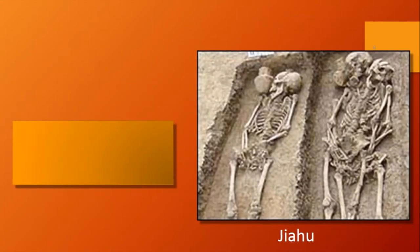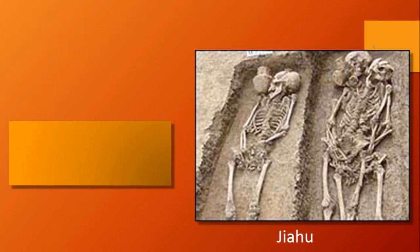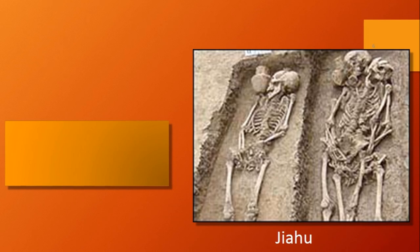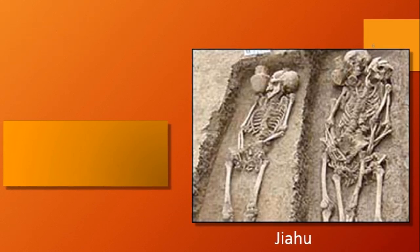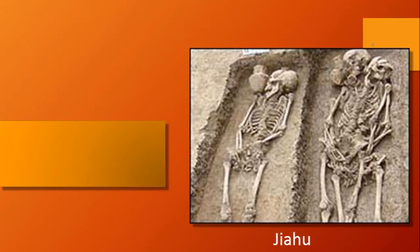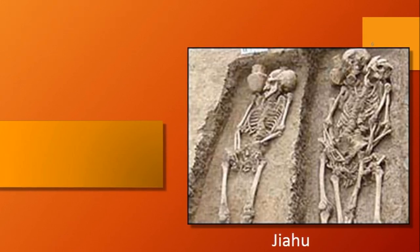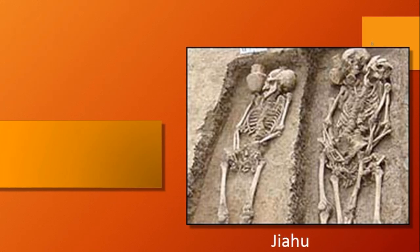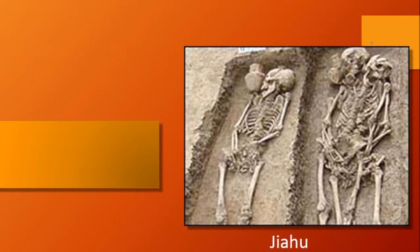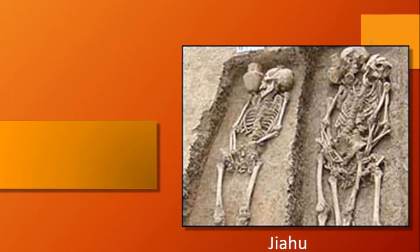Here are images of some grave sites from Jiahu. On the left, you can see a body lying on its back — face up, toes up — with a grave good, a jar, right by the head. Then there's an interesting grave site to the right: two people buried on top of each other with a pot. Turn off the video and think about why you'd have two people buried on top of each other. We don't know the answer to this.